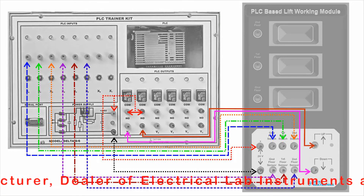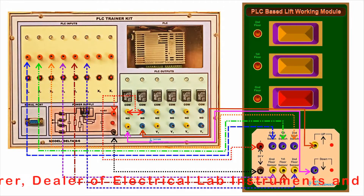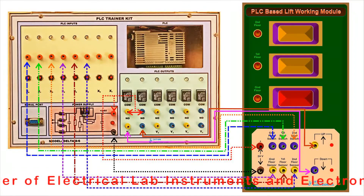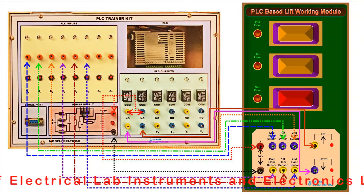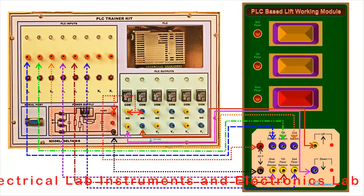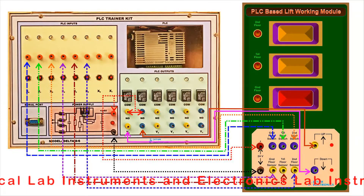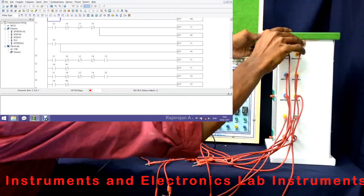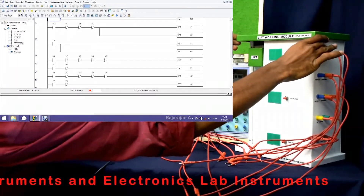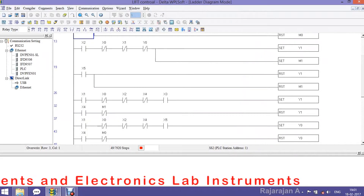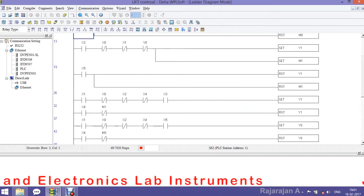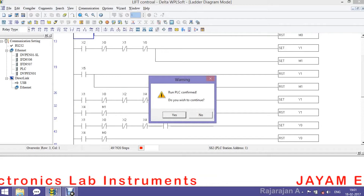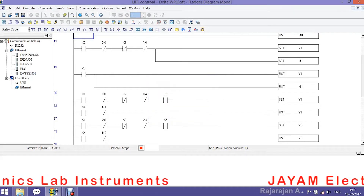Let's go through the connections: X0 is 0, X1 is 0, X2 is 0, X3 is 0, X4 is Sensor 1, X5 is Sensor 2, Y0 is Lift Down, Y1 is Lift Up — both connected to 24V. So we can get the connection and move the lift. Go to Communication, select Run, confirm yes, and select Online Mode.